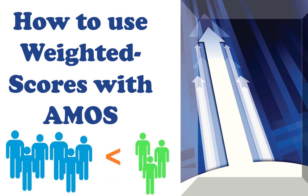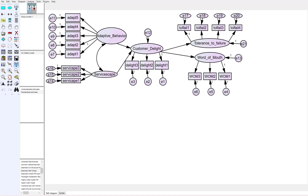This is a question I get a lot from my students — not necessarily my business students as much as my social science students coming from other areas, especially education. The question is: I need to use weighted scores. If you're not familiar with why we do that, weighted scores are essentially trying to mirror some kind of percentage of a known population in your sample.